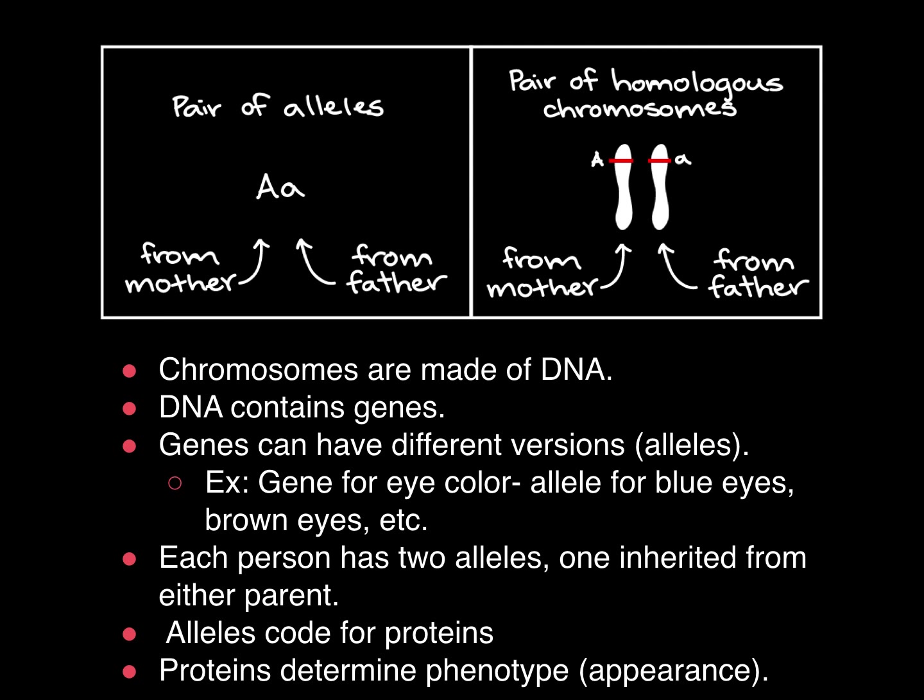Chromosomes are made of DNA, and DNA contains genes. These specific genes — for example, a gene for eye color — can have different versions, which we call alleles. In the case of eye color, we could have an allele for blue eyes, brown eyes, etc. Each person has two alleles, one inherited from either parent. Here we have a pair of alleles with one inherited from the mother and one from the father. These alleles code for proteins, and proteins determine the phenotype or appearance.